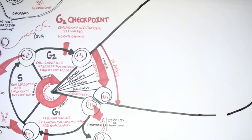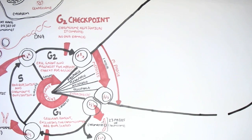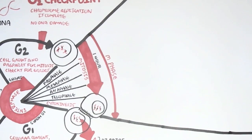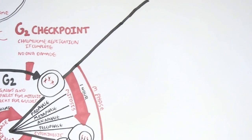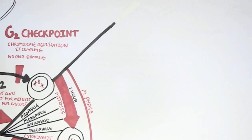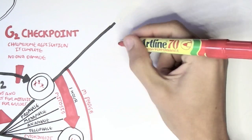Just recapping: the cell cycle consists of two main phases, the interphase and the M phase. Mitosis occurs within the M phase, and mitosis is the process where a cell will divide to produce two daughter cells.